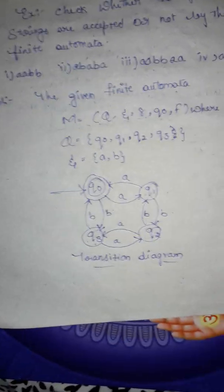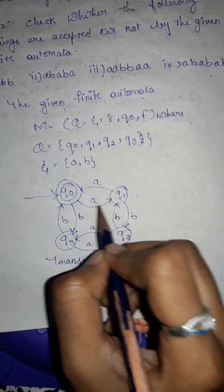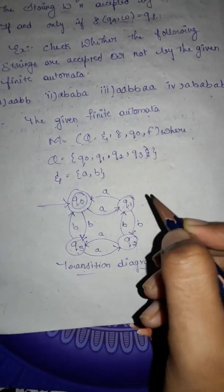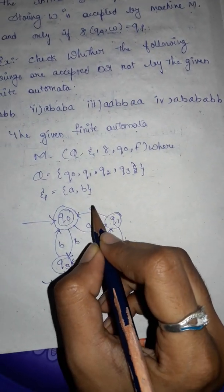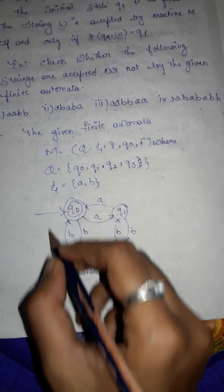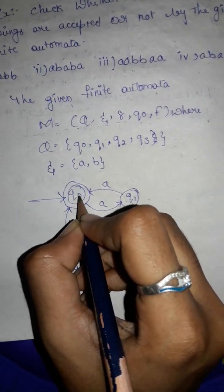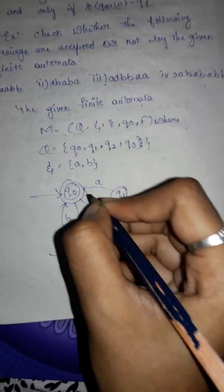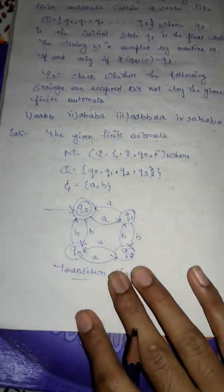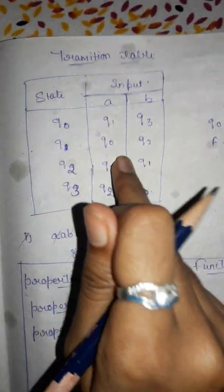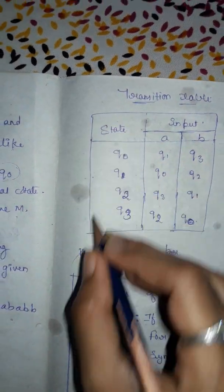From q0 on input a, we go to q1. From q1 on input a, we go to q0. One important point to note: q0 is both the initial state and the final state. This is the transition diagram.